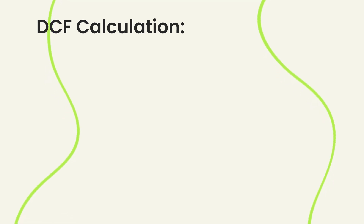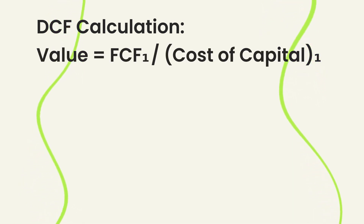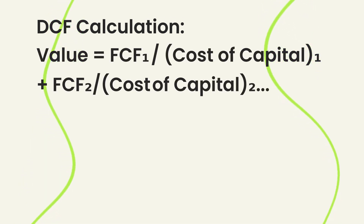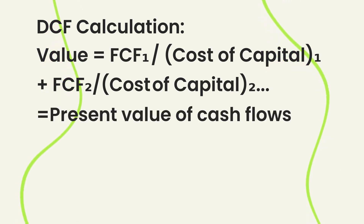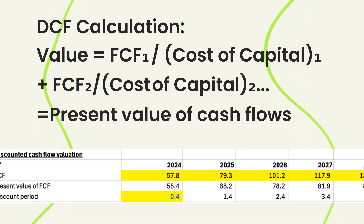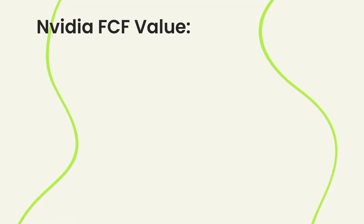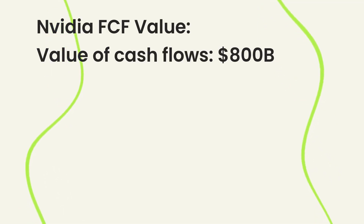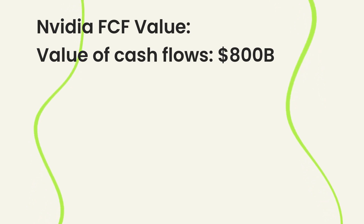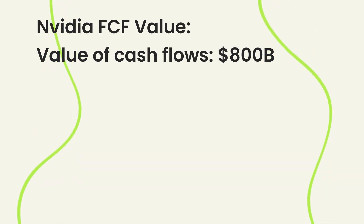Now that we have the cost of capital — the discount rate — we take free cash flow for each year and discount it by the cost of capital: one plus the discount rate to the power of how many years. We do that for every year for the next 10 years. That works out to about $800 billion in discounted free cash flow — the present value of all that cash summed together.